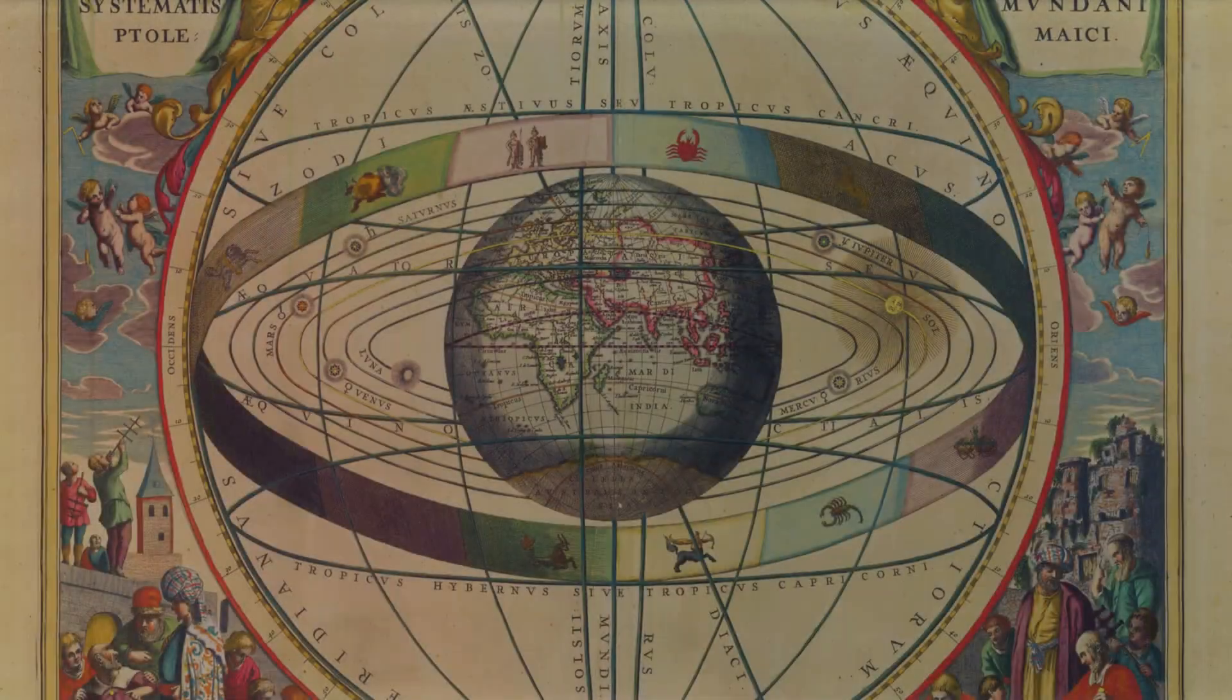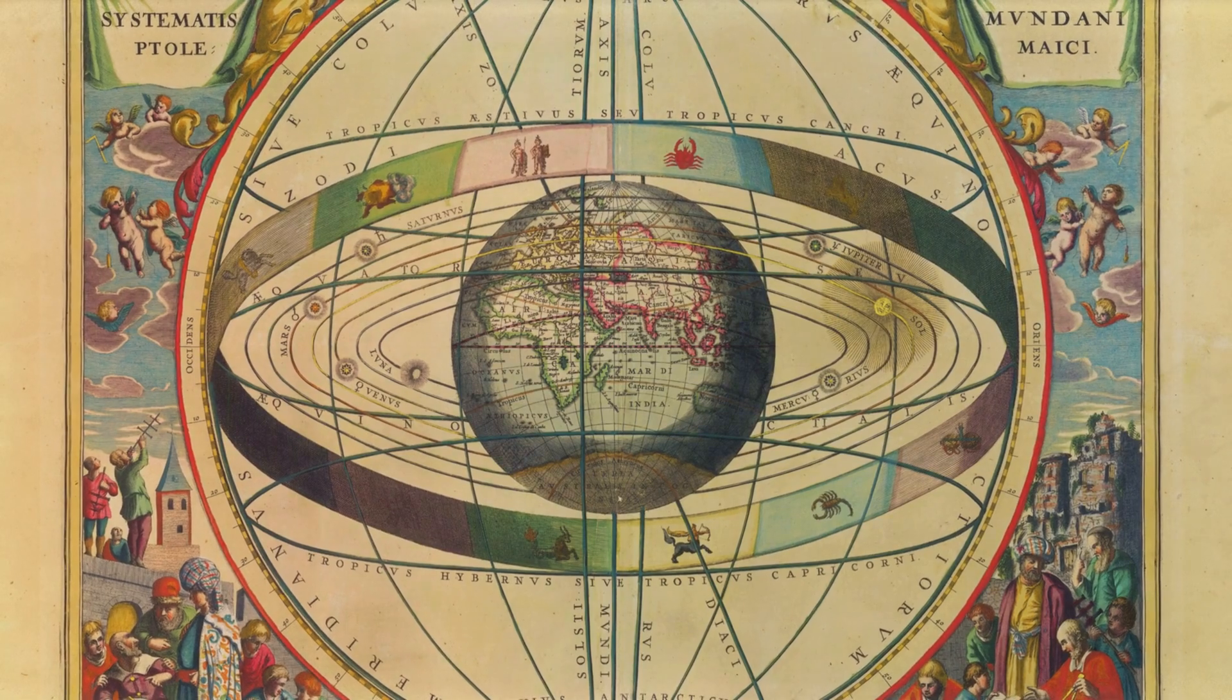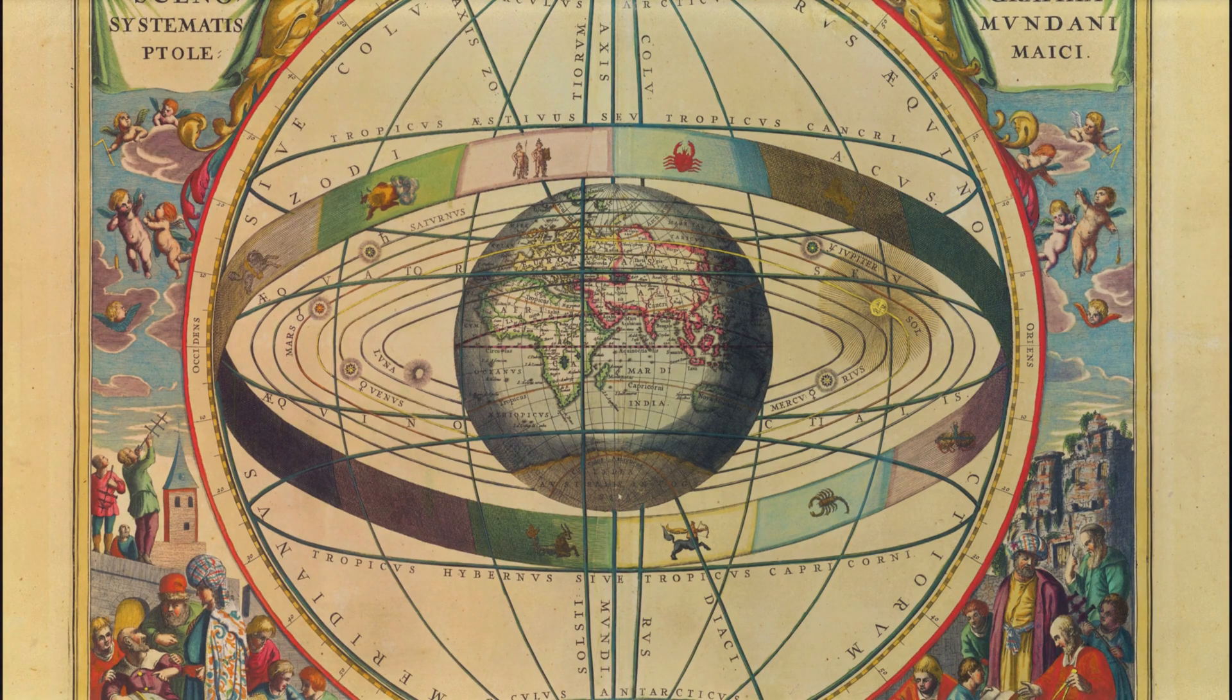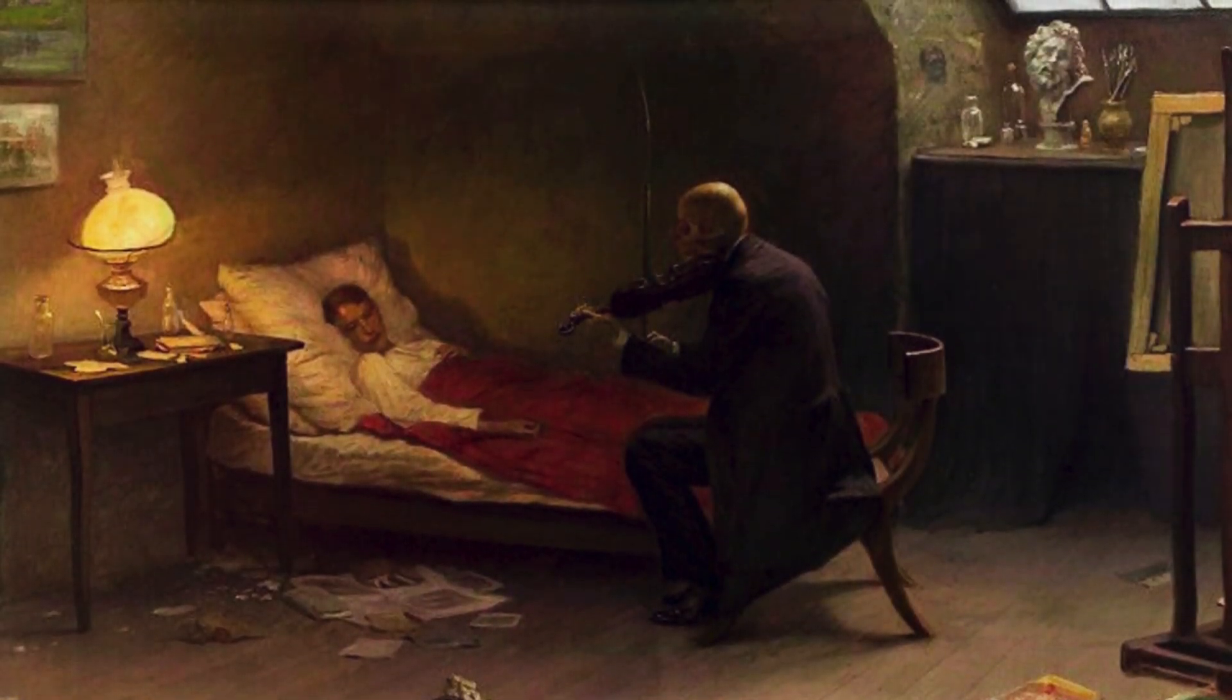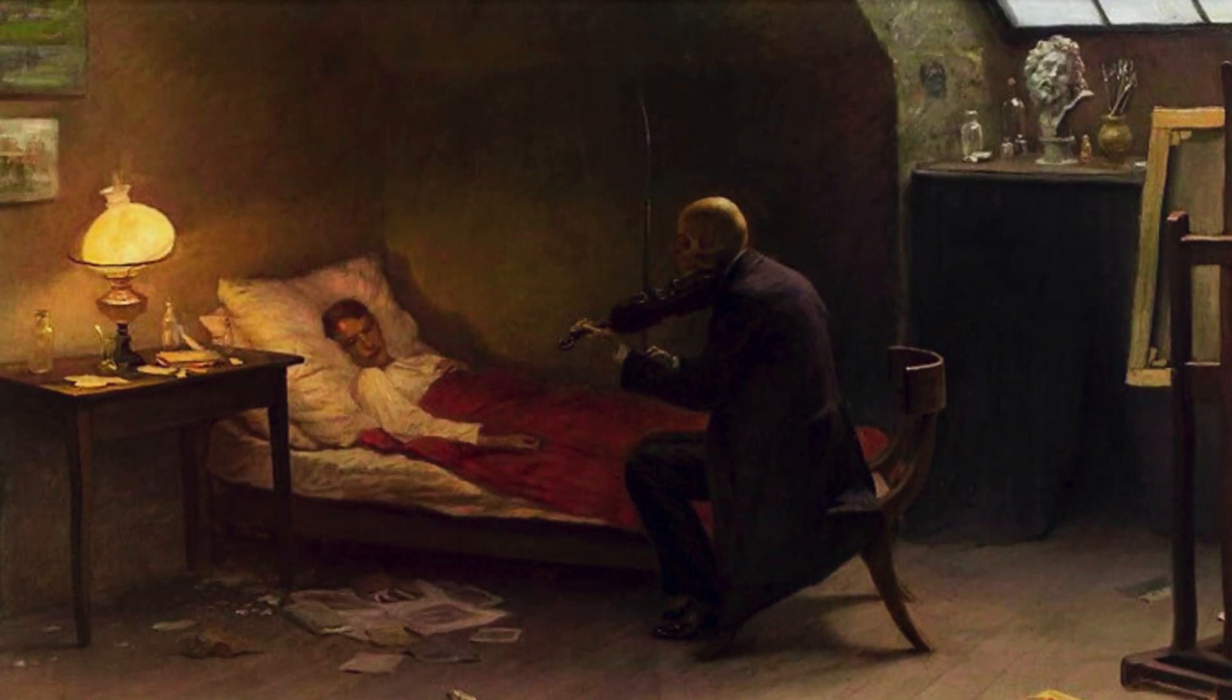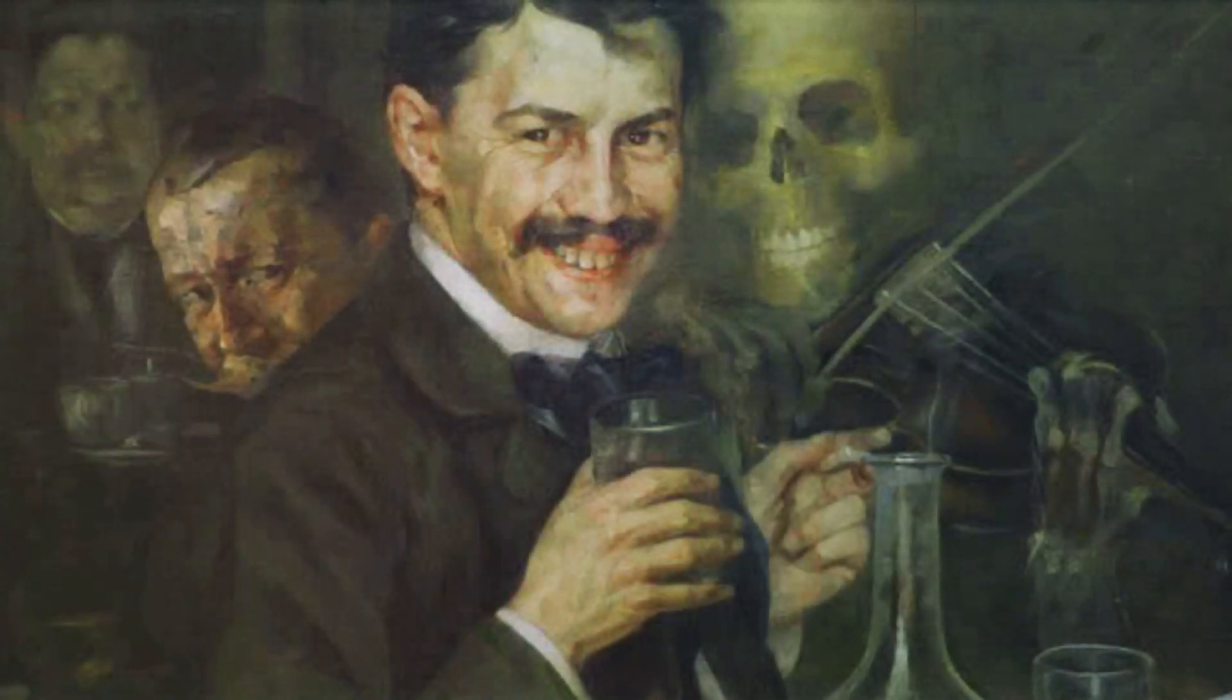Closely tied to this metaphysical system was Leibniz's famous assertion that we live in the best of all possible worlds. At first glance, this claim appears startling, particularly when confronted with suffering, evil and imperfection. But Leibniz was not suggesting that the world is free from hardship. Rather, he argued that given the infinite number of possible ways reality could have been structured, God, being both rational and benevolent, chose the one that maximized overall goodness while allowing for free will and the existence of natural laws.